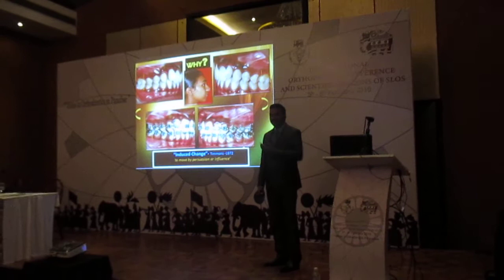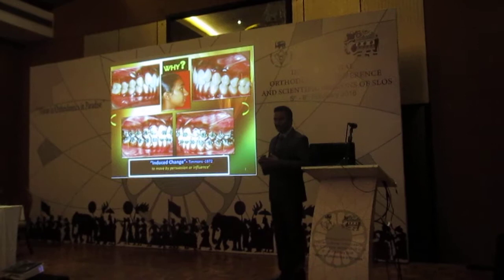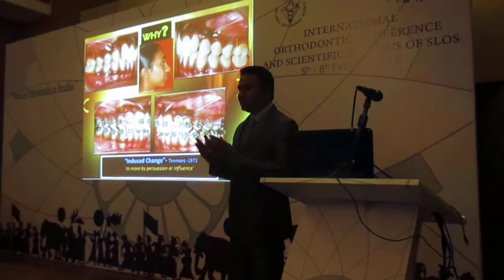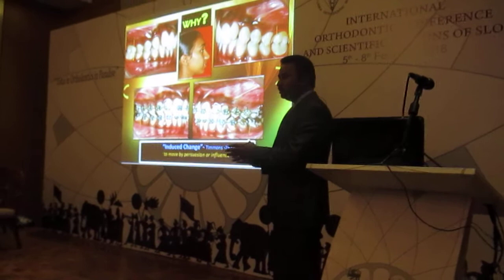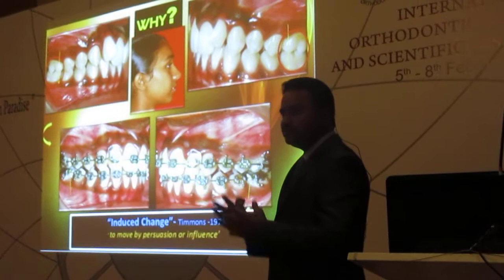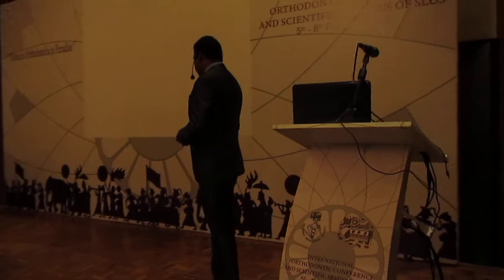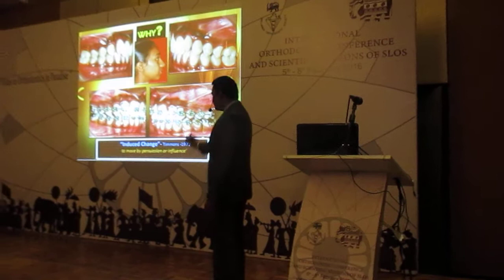I had a small survey behind me and made an interesting observation. In cases with Class 2 Division 2 malocclusion, after leveling and aligning, I observed that the molar relationship which was an end-on or a proper Class 2 has shifted to a full Class 1 or near Class 1 after leveling and aligning. I was amazed by this kind of change, and I found that way back in 1972, Timmons made a similar observation in Class 2 Division 1 malocclusion and called it an induced change — meaning a change moved by influence.